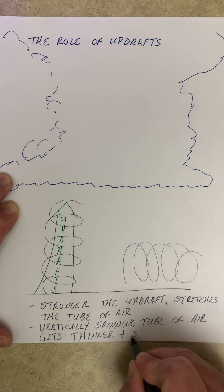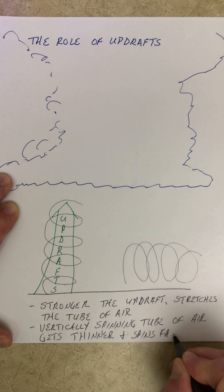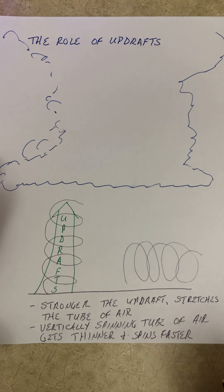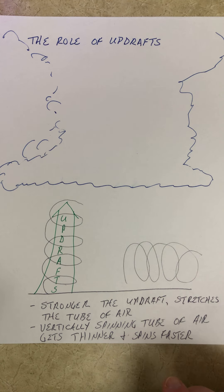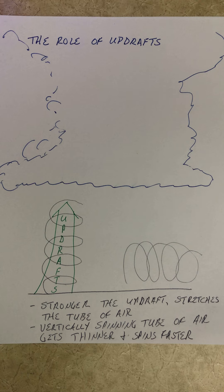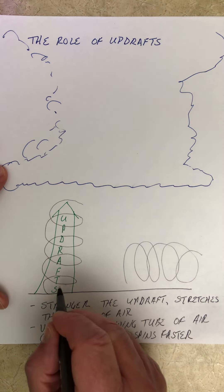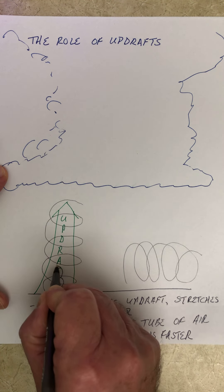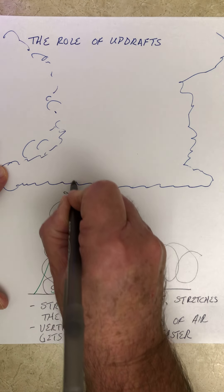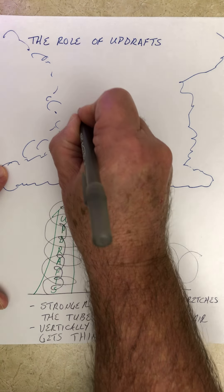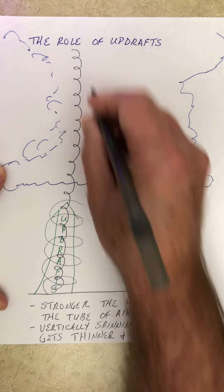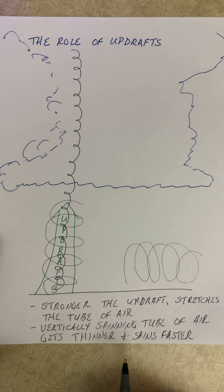When it gets thinner, it spins faster. The perfect example: if you've ever watched figure skating, when a figure skater goes into a spin they have their arms out and they're spinning, but as they draw their arms in and become thinner, they spin faster. It's called the conservation of angular momentum. So if this updraft creates this spinning tube of air throughout the cloud, it's going to get thinner and rotate faster and faster and faster.